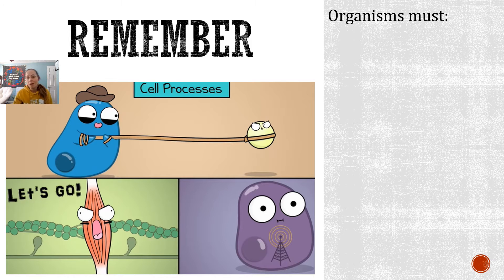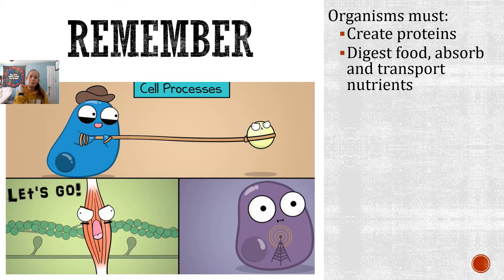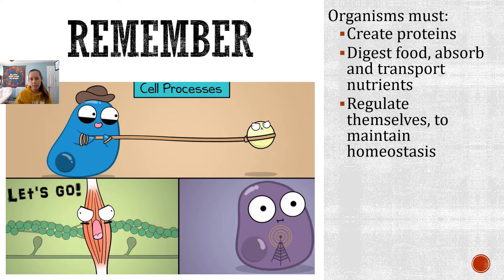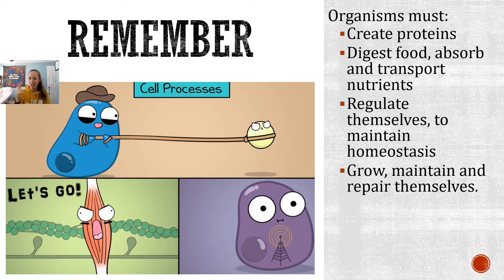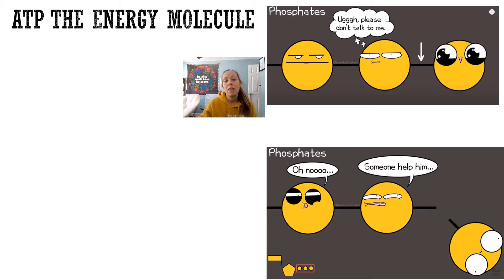Let's remember things we've talked about since we started cells. Organisms must be able to create protein, digest food, absorb and transport nutrients, and regulate themselves to maintain homeostasis. And they also need to grow, maintain, and repair themselves. To do all of those things, cells need energy. So the energy molecule for cells is ATP.